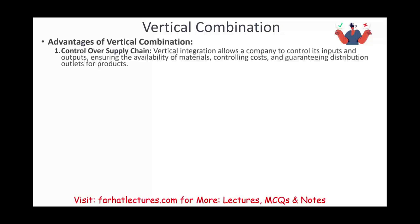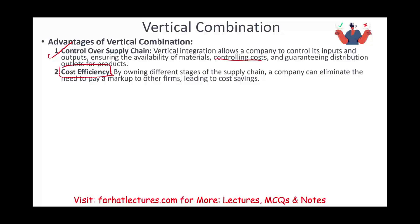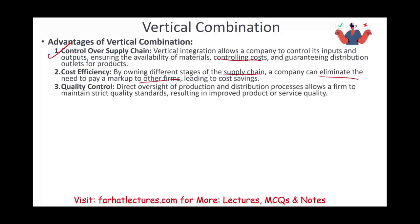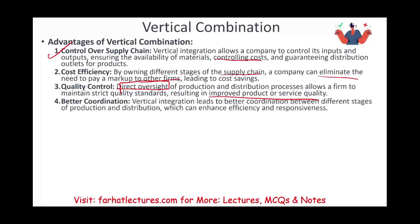Advantages of vertical combination include control over the supply chain, guaranteed distribution outlets, and control over cost and quality. By owning different stages of the supply chain, a company can eliminate the markup of other firms, leading to cost savings. With direct oversight of the whole process, Apple can learn from its mistakes at every stage, resulting in improved products and better customer service. Better coordination is also achieved because it's the same company — vertical integration leads to faster communication and response across all production and distribution stages.